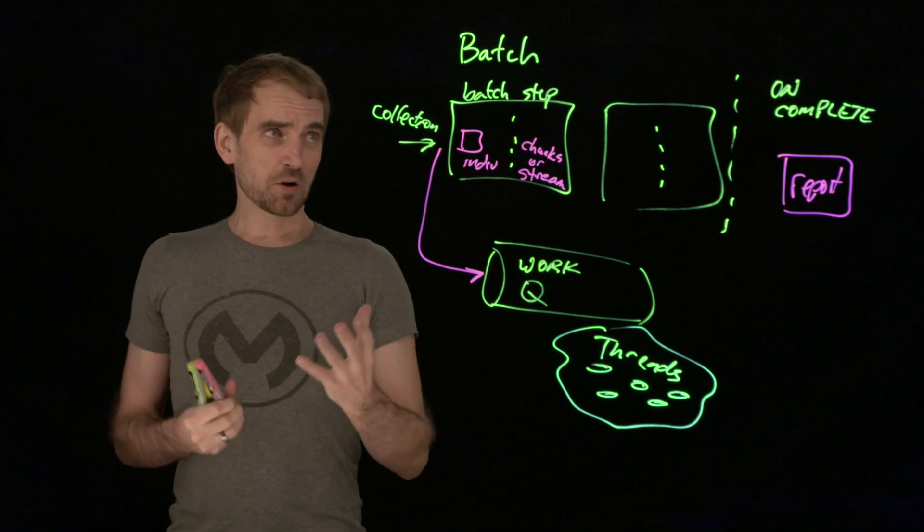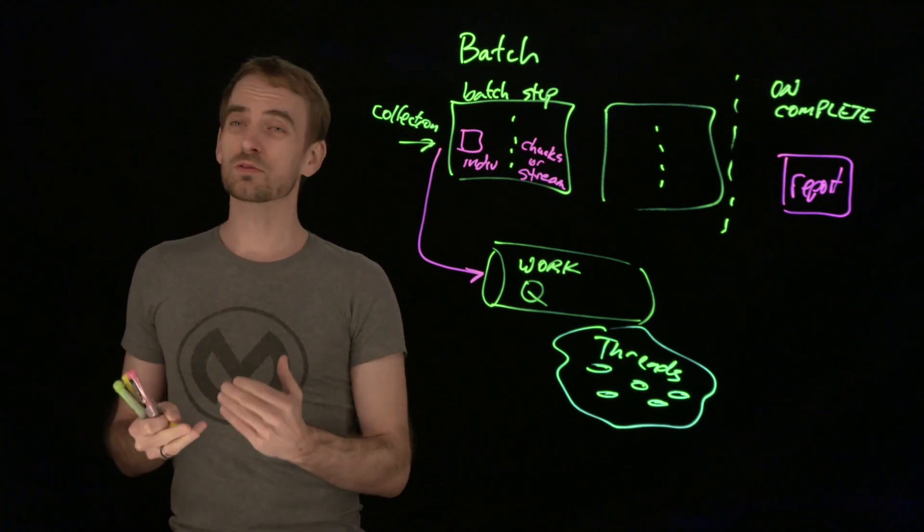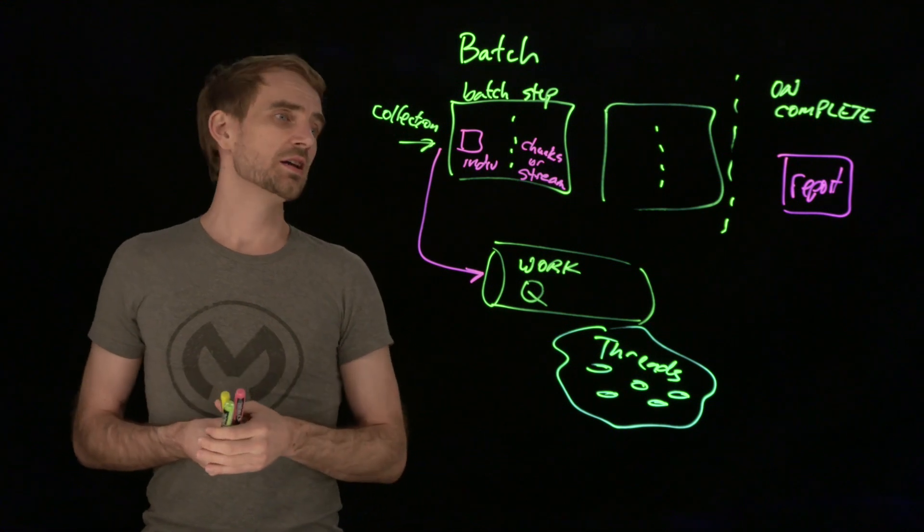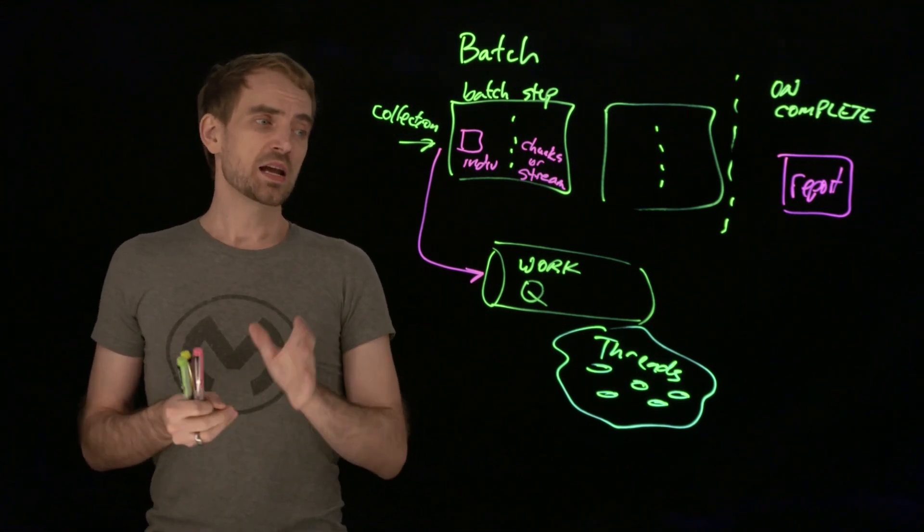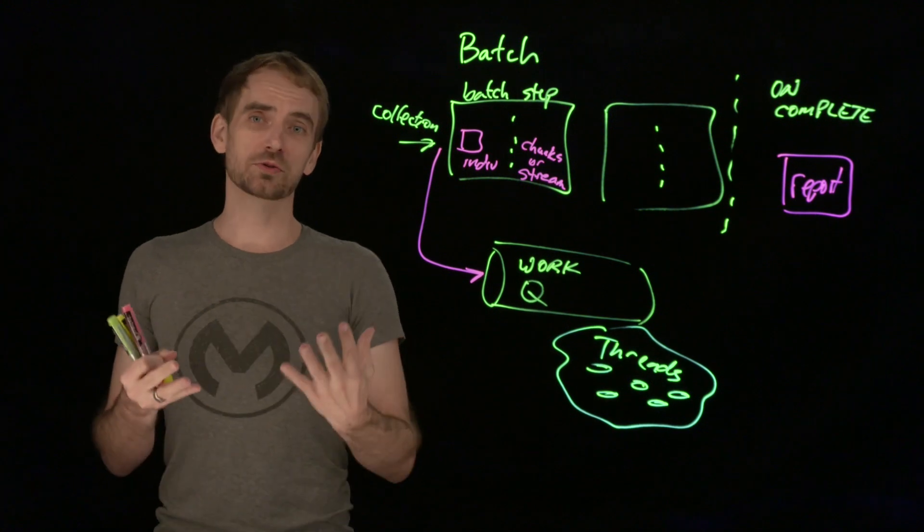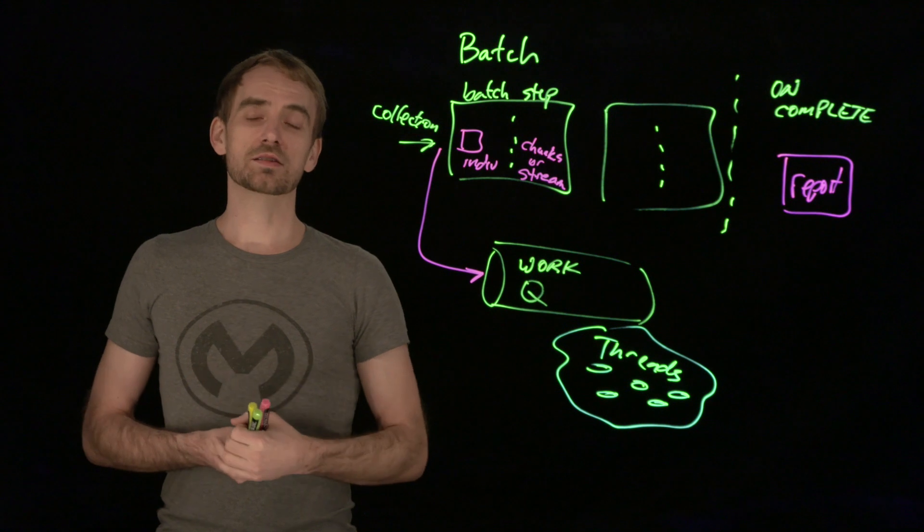So in summary, when you've got lots of records to get through, in the order of thousands, hundreds of thousands, you want to take them through a series of steps, that's your batch step, and you want it to throw multiple threads at the problem so that it can process it quickly. That's where you might consider using batch.